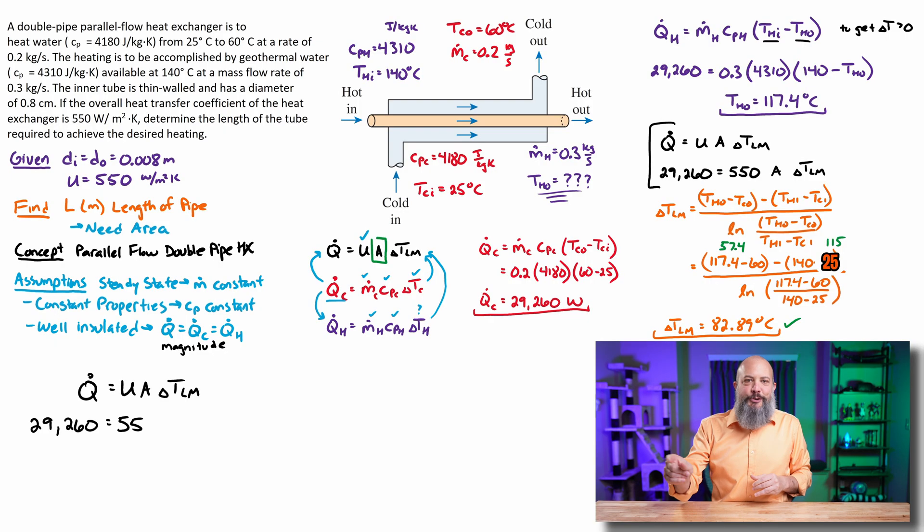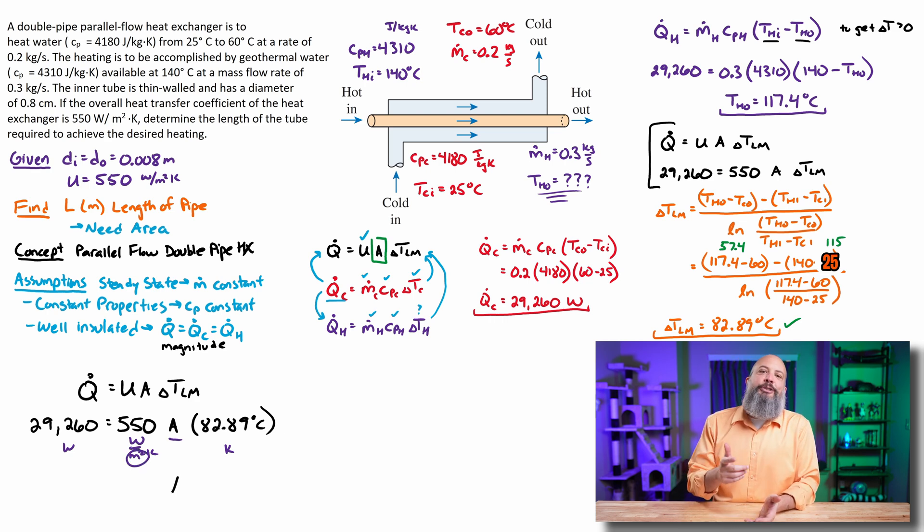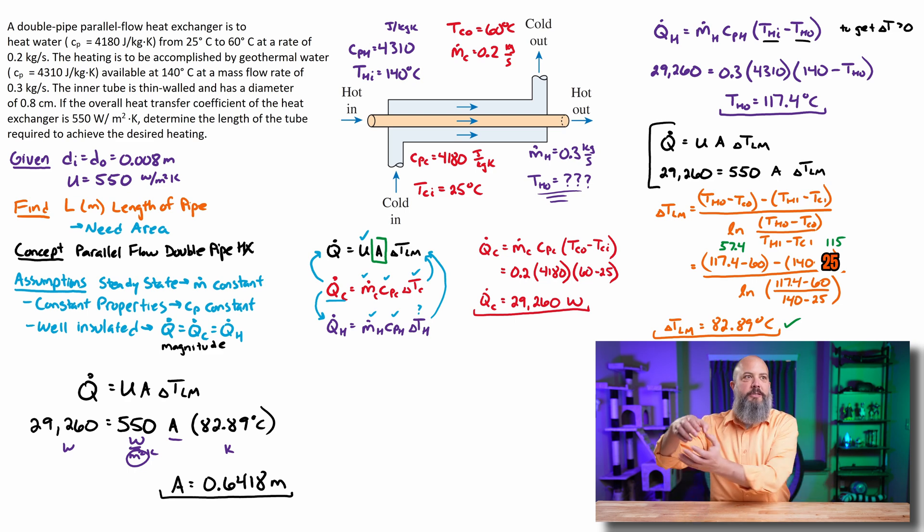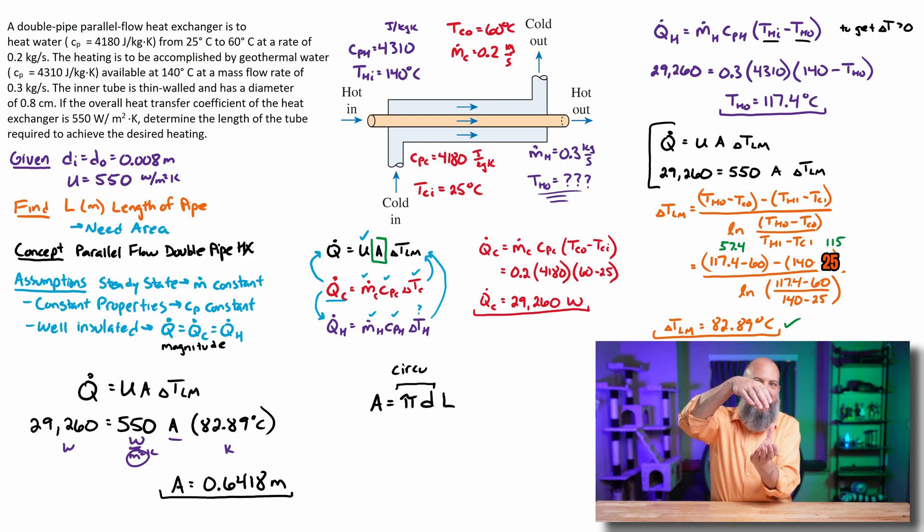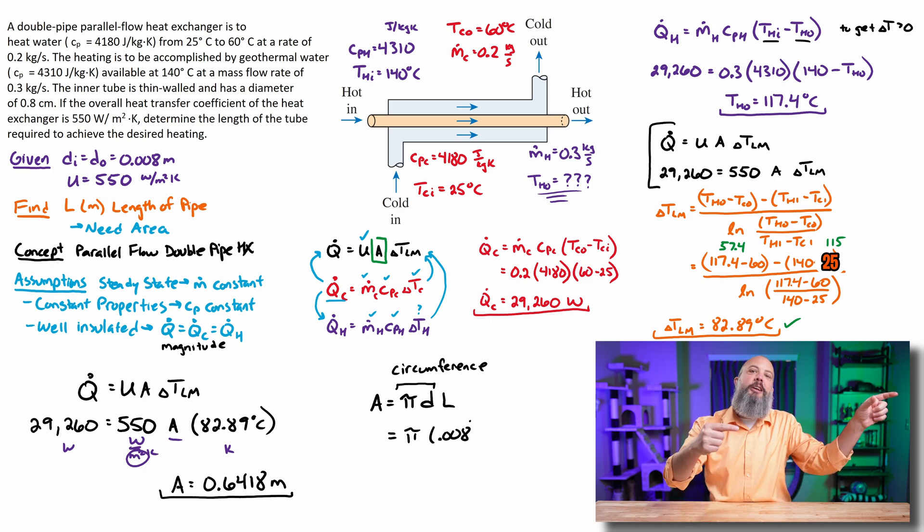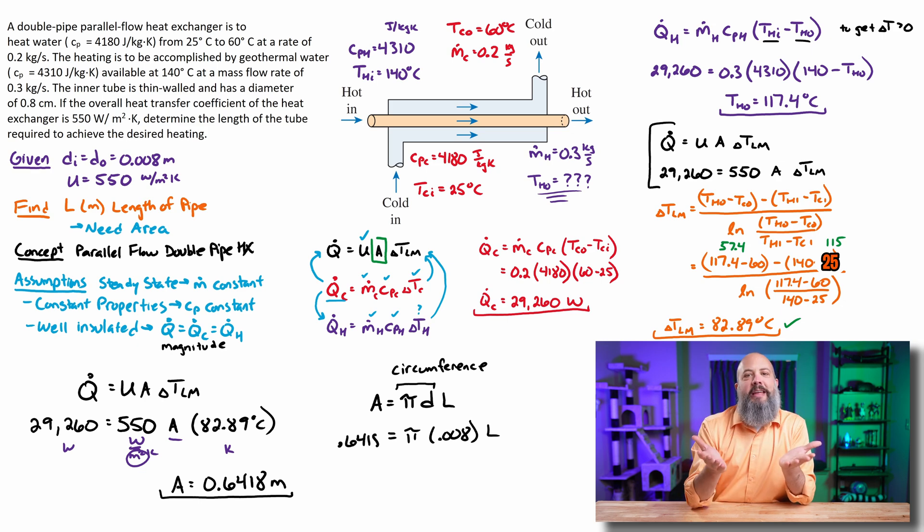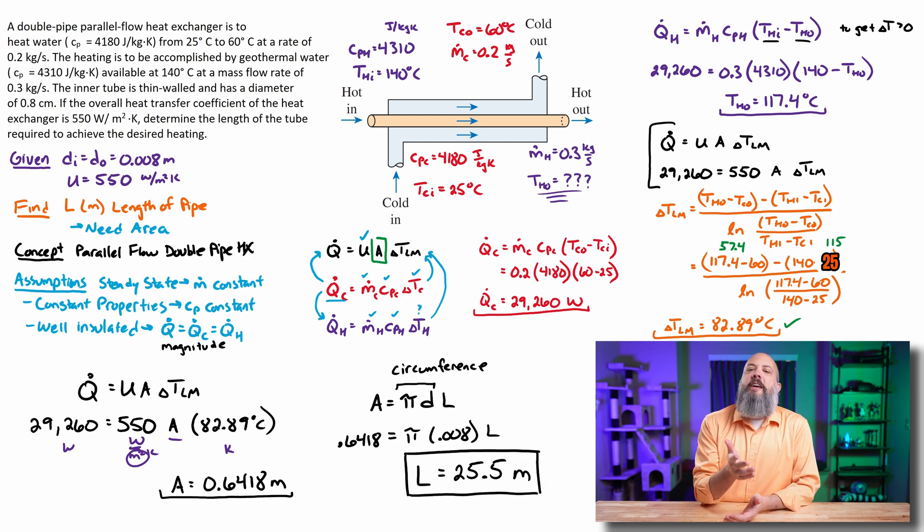So circling all the way back to our original U A delta T_LM equation, we've got Q dot, the 29,260. We've got U that was given 550. A is the answer trying to find. And now we have delta T_LM, 82 degrees. And we can get a surface area of 0.6418 meters squared. And the surface area of the pipe is basically the outer area of a cylinder. That's the point of contact. This is an outer pipe outside an inner pipe. So the surface area is the cylinder. So this is going to be circumference times length is going to be the surface area. So pi times diameter times length. So with area known 0.6418, pi times the diameter of 0.008 for 8 millimeters gives us a final length of 25.5 meters.